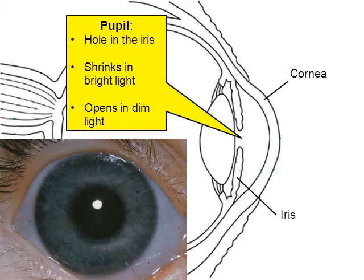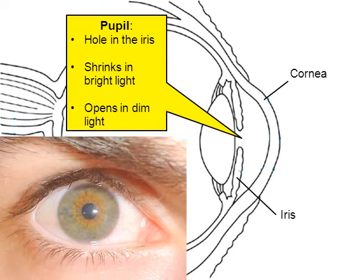In a bright room you can see the difference — the black hole, the pupil, is a lot smaller. These are just two pictures I found that show the point nicely. You can see how much the pupil has shrunk because this person is in a bright room — there's probably a flashlight in the person's face.